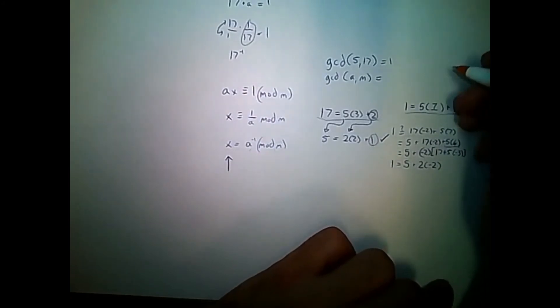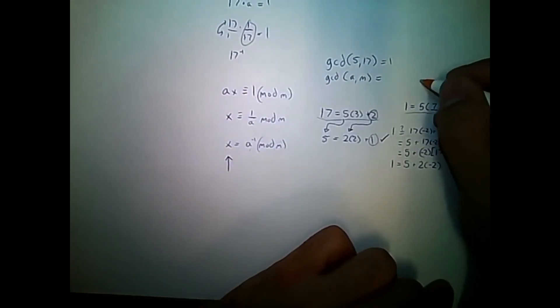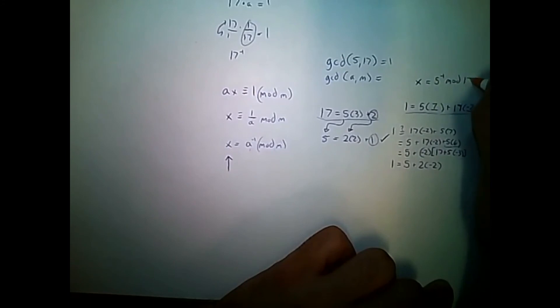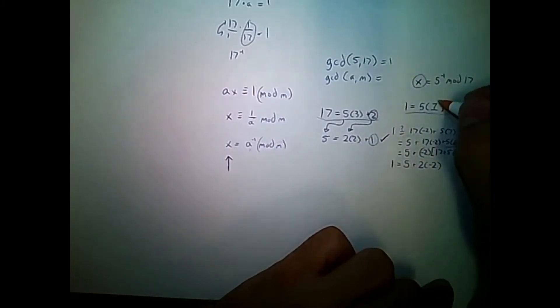Great. So, remembering what we're solving for. Our x equal to a, which is 5 minus 1, mod 17. And we have our x here, which is 7.